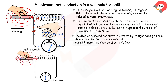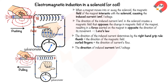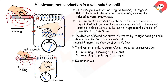When the magnet is pulled away from the solenoid, the left end of the solenoid becomes a south pole, creating an attractive force that pulls the magnet back. This change in magnetic field direction also causes the induced current to reverse its direction. The direction of the induced current or EMF in the solenoid can be reversed by reversing the direction of the magnet's motion or reversing the polarity of the magnet. If the magnet and solenoid are stationary, no induced current is produced.